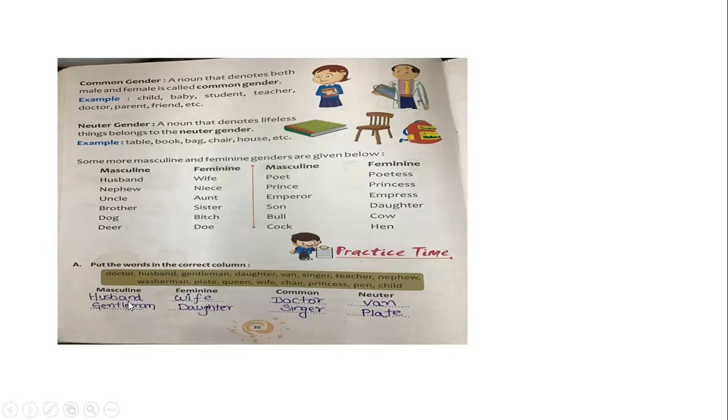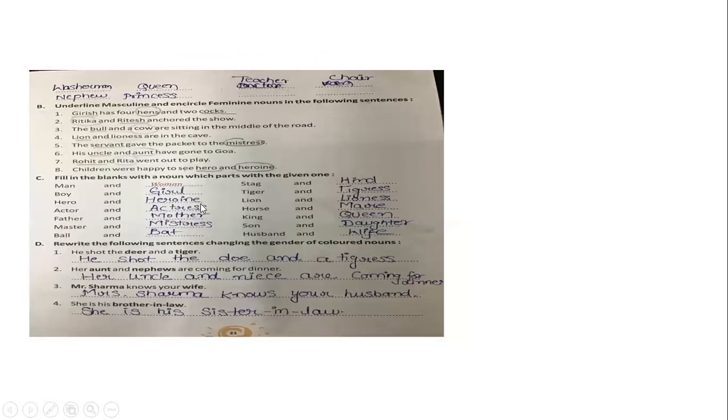So masculine: my husband, gentleman. Feminine: my wife, daughter. Common: doctor, singer. Neuter: van, plate. Again for masculine: washer, man, nephew. Feminine: wife, queen, princess. Common: teacher. Teacher can be male or female, so that is why we call it common or neutral gender.